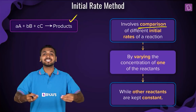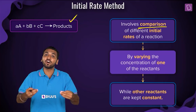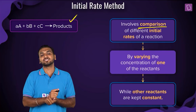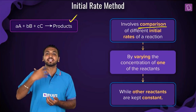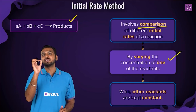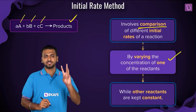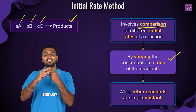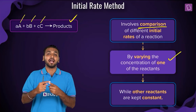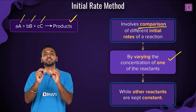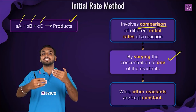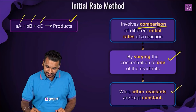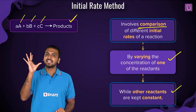Comparison of what? The comparison of initial rates, when you are taking different known concentrations of the reactant. For example, with reactants A, B, and C, you vary the initial concentration of one reactant — say A — while keeping the concentration of B and C constant. Then you compare the different rates that you get.